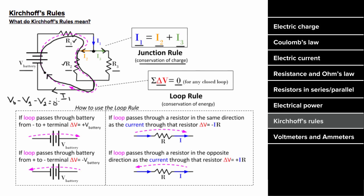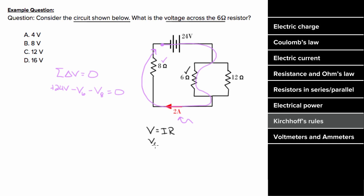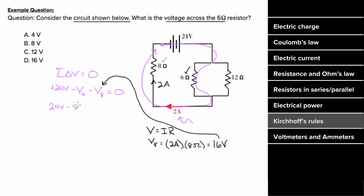For the Kirchhoff's Rules example: determine the voltage across the six ohm resistor using the loop rule. Starting behind the battery and going around the loop: positive 24 volts minus the voltage across the six ohm resistor minus the voltage across the eight ohm resistor equals zero. We're given that 2 amps flows through the eight ohm resistor, so its voltage is 2 times 8 = 16 volts. Substituting: 24 minus V₆ minus 16 = 0, giving V₆ = 8 volts. The voltage across the six ohm resistor is 8 volts.